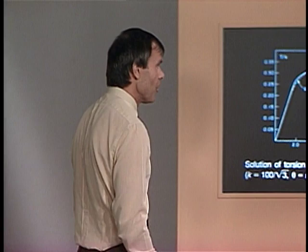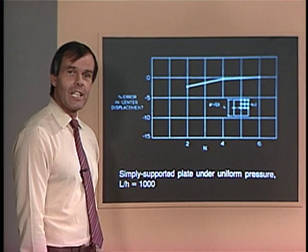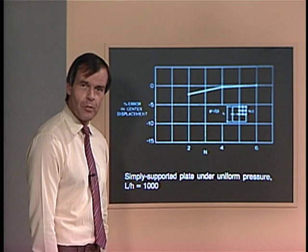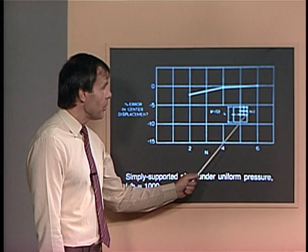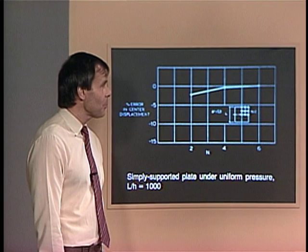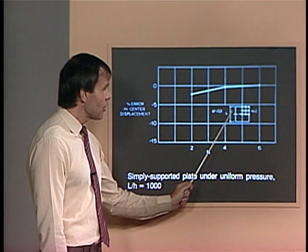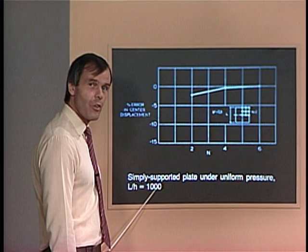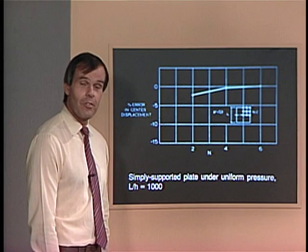The first slide relates to the analysis of a simply supported plate under uniform pressure, modeling one quarter of the plate due to symmetry. With n equal to 2 giving 4 elements, L over h equals 1,000 — a very thin plate. We would get very bad results if shear locking were present. As I pointed out earlier, the MITC4 element does not have any shear locking, and as we increase n, we get excellent convergence behavior to the analytical solution.